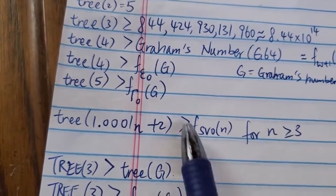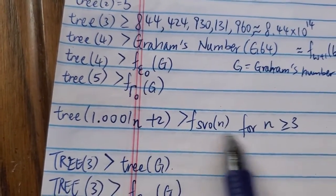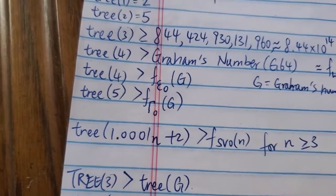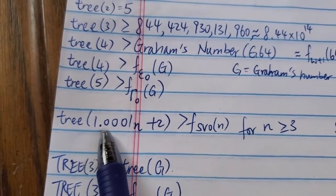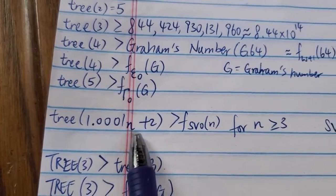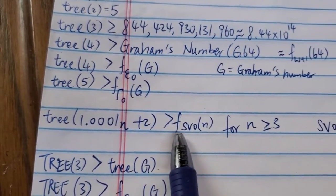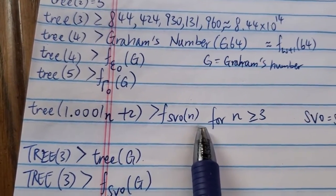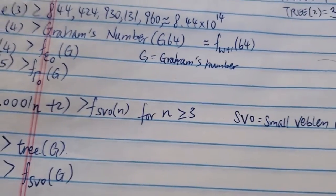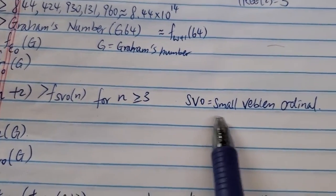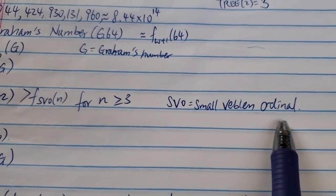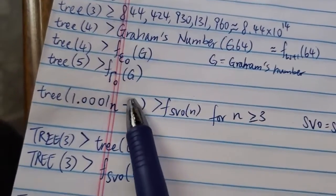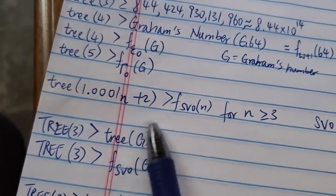There's also a generalized result: it can be shown that the weak 3 of (1.001n + 2) is greater than F of SVO applied to n, for n greater than or equal to 3. Here SVO stands for the Small Veblen Ordinal, which is another ordinal much more powerful than even Gamma.